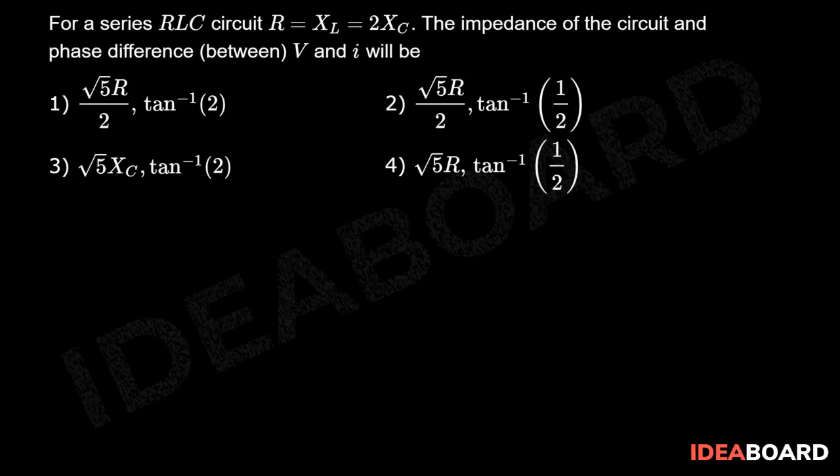For a series RLC circuit, R is equal to XL is equal to 2XC. The impedance of the circuit and phase difference between V and I will be. So in this question, first of all they provided that R is equal to XL and XC is equal to R by 2, and of course R is equal to R.